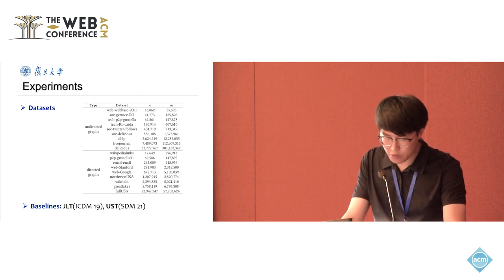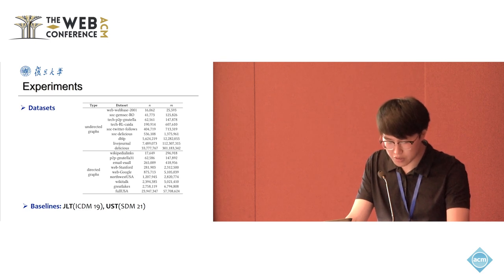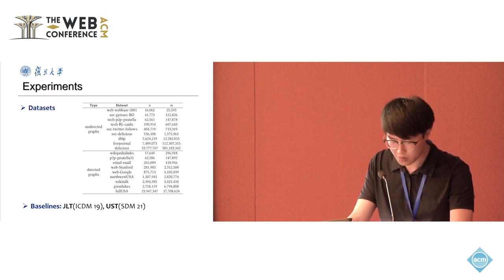For these datasets, the number of nodes ranges from about 16,000 to 33 million, and the number of edges ranges from about 25,000 to 301 million.